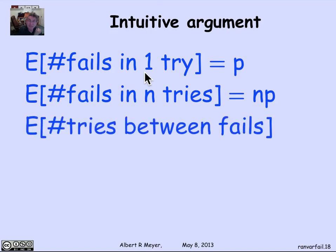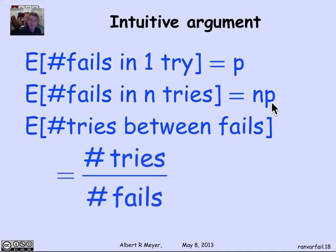Now, what's the expected number of tries between failures? Well, if you think about that, I've done n tries and I've got n p failures. So if I divide the number of tries by the number of failures, that by definition is the average time between the failures. It's the expected time to a failure. So I divide the number of tries by the number of fails, which by definition is the average number of tries between failures. And it's equal to n over n p, which is equal to 1 over p.